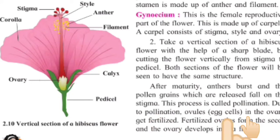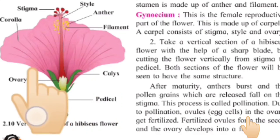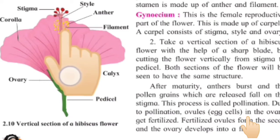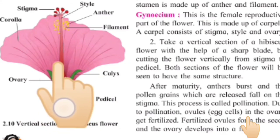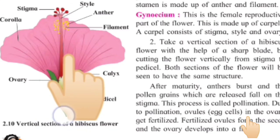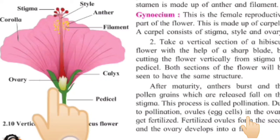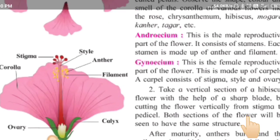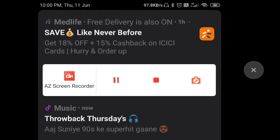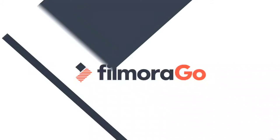Due to pollination, ovules in the ovary get fertilized. When the anther's pollen reaches the stigma, the fertilization process begins in the ovary. If the ovary is fertilized, it will form seeds and eventually develop into fruit. This completes our topic on the parts of flowers. Thank you very much.